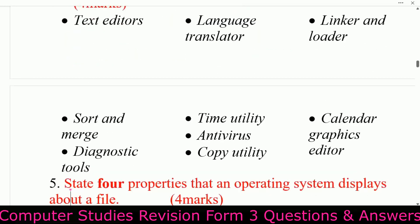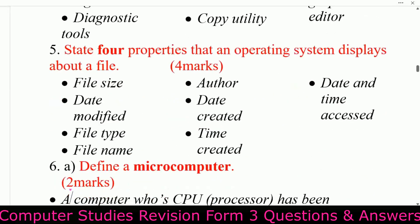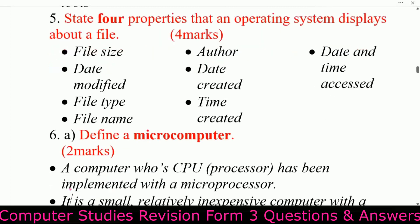Further examples of utility software include: diagnostic tools, time utilities, antivirus, copy utility, calendar, and graphic editor. State four properties that an operating system displays about a file: file size, date modified, file type, file name, date created, time created, and date and time accessed.